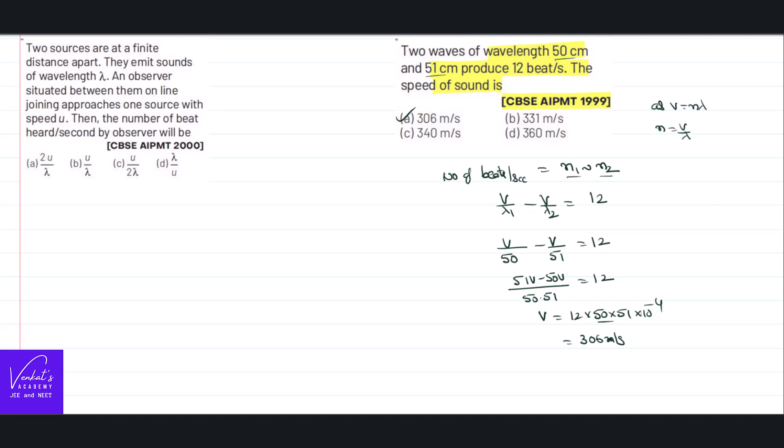And now let us solve the other problem, that is AIEEE AIIMS 2000 question. It says two sources are at finite distance apart, so what he meant says there is source one, source two. They are at a known distance, a fixed small distance. They emit a sound of wavelength lambda. This also emits the sound of wavelength lambda. An observer situated between them on line joining.